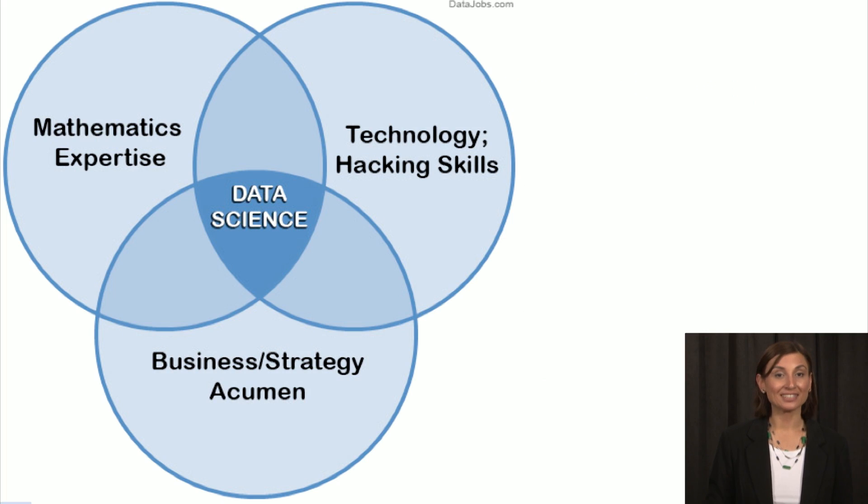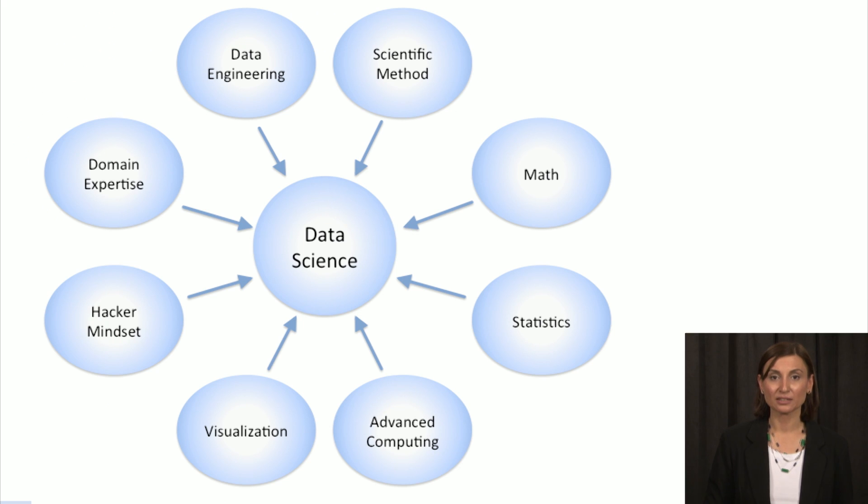You have probably seen diagrams like this one that describes data science. Data science happens at the intersection of computer science, mathematics, and business or scientific expertise. If we zoom deeper into this diagram and open up these sets of expertise, we would see a variation of this figure.